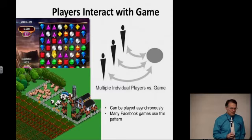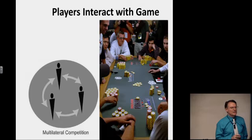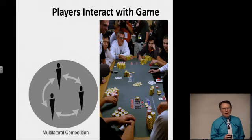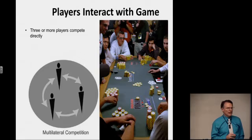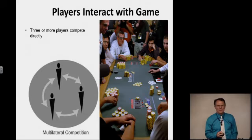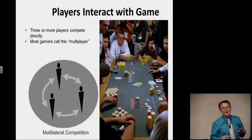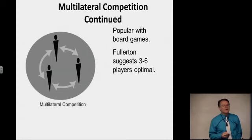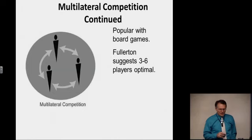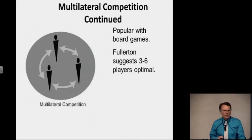How about multilateral competition? Poker would be an example — everybody's against everybody, trying to win the hand with their betting, bluffing, and luck. In multilateral competition you have three or more players directly competing against each other, usually synchronously. Most gamers would define this as the classic multiplayer format. It's popular with board games — even old family board games before home computers. The textbook suggests three to six players is optimal; once you get a huge number of players it becomes unwieldy, especially if there's turn-taking involved.